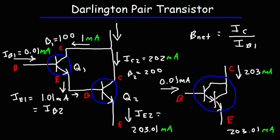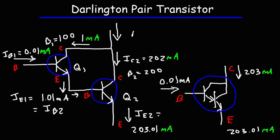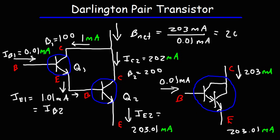For the entire Darlington pair transistor, the net beta equals IC divided by IB — that's 203 milliamps divided by 0.01 milliamps. So the total current gain is 20,300. As you can see, it is very, very high compared to a current gain of 100 or 200 for an individual transistor. By connecting two NPN transistors to form a Darlington pair, you can greatly increase the current gain.